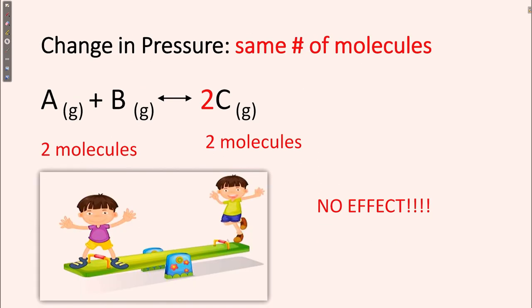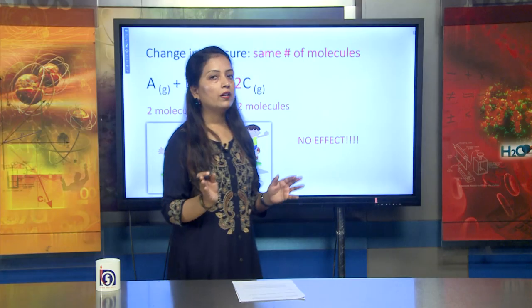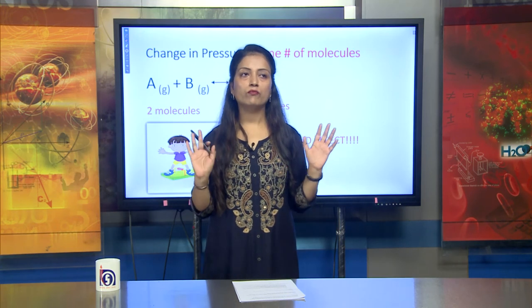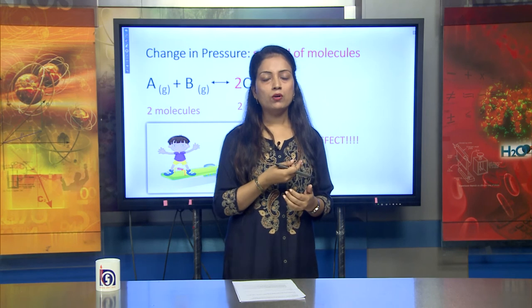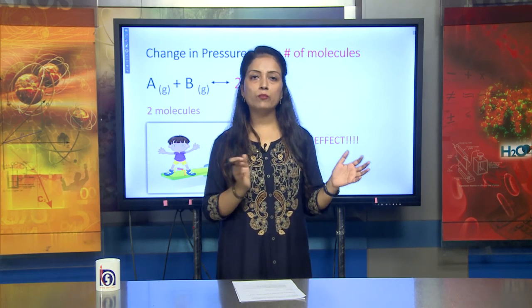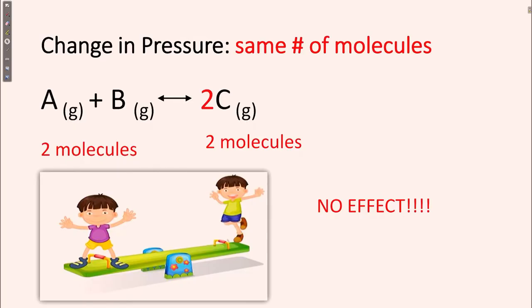If the reactant molecules and product molecules are the same, then what will happen? We previously discussed the case with different numbers of molecules. But when the same number of molecules are present on both the reactant side and the product side, then if we increase or decrease the pressure, this reaction is not affected — there is no change. This happens because both the reactant part and the product part have the same number of molecules.